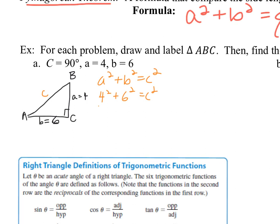4 squared plus 6 squared equals c squared. If we square 4 we get 16, and if we square 6 we get 36. Add them together and we get 52 equals c squared. Take the square root of each side and c equals the square root of 52, which is approximately 7.2.